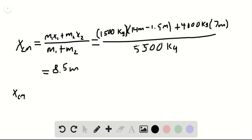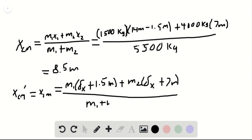Which is equal to the X center of mass that we just calculated which is going to be equal to M1 times delta x plus 1.5 meters plus M2 times delta x plus 7 meters divided by M1 plus M2. Again M1 and M2 are 1,500 kilograms and 4,000 kilograms respectively, so if you solve for delta x you find that delta x is equal to 3 meters. Delta x is equal to 3 meters, we can box it in as our solution.